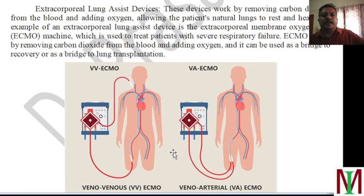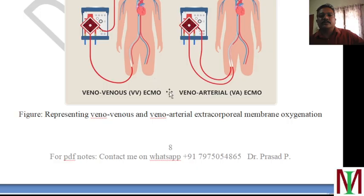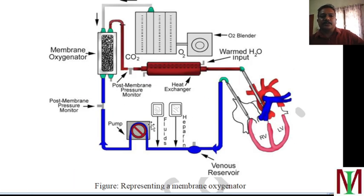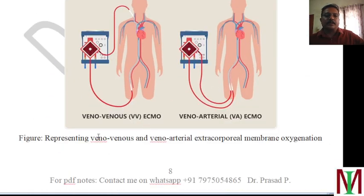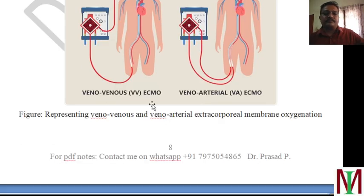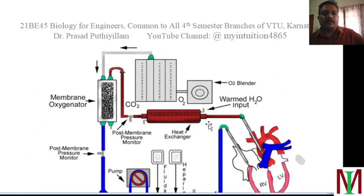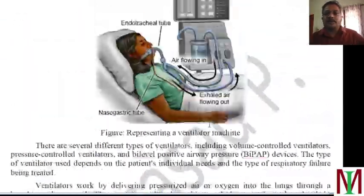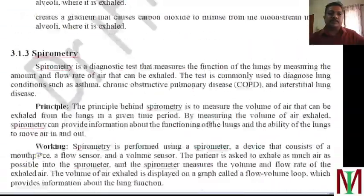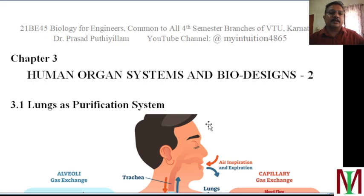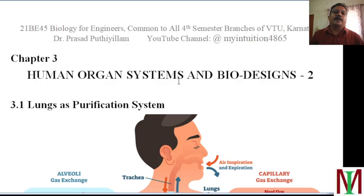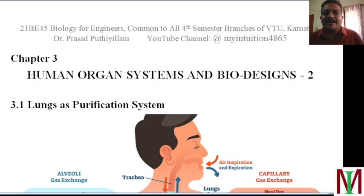The membrane oxygenator uses a semi-permeable membrane to transfer oxygen and carbon dioxide between the blood and air. Blood is pumped through the membrane where it contacts the air, carbon dioxide is taken out and oxygen is added, then pumped back to the body. The second type is the extracorporeal lung assist device — extracorporeal membrane oxygenator (ECMO) — with two types: veno-venous (VV-ECMO) and veno-arterial (VA-ECMO). That concludes this topic on the lung air purification system. The PDF study material link will be available in the description box of the YouTube channel MyIntuition. Please subscribe, like, and share. Signing out — Dr. Prasad.